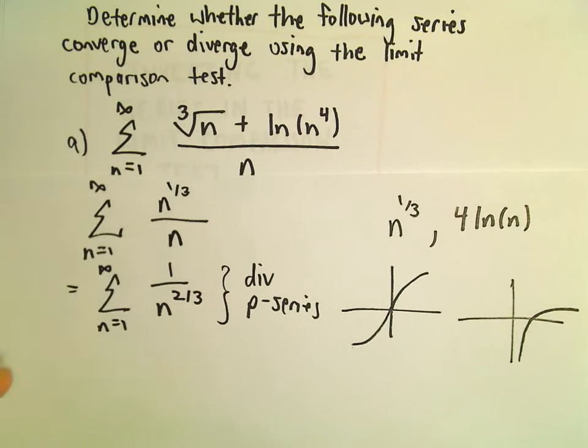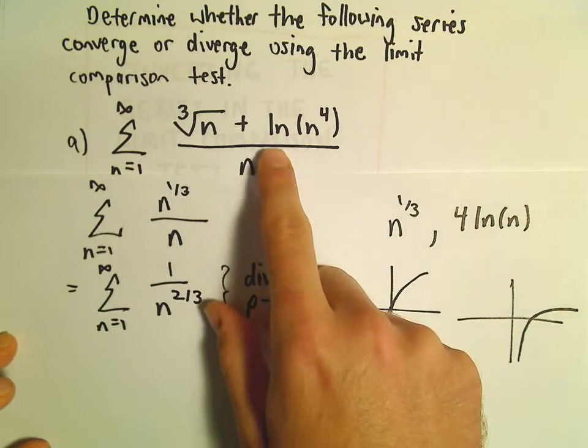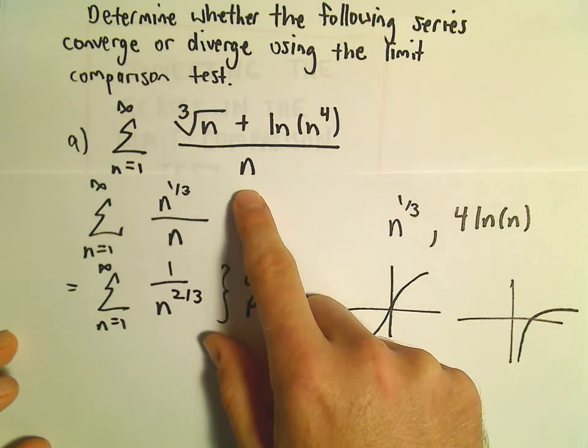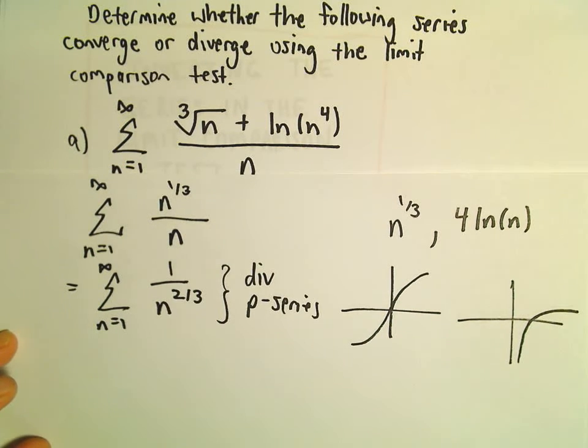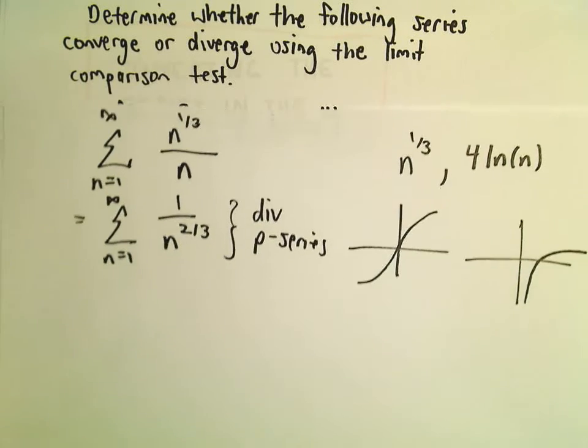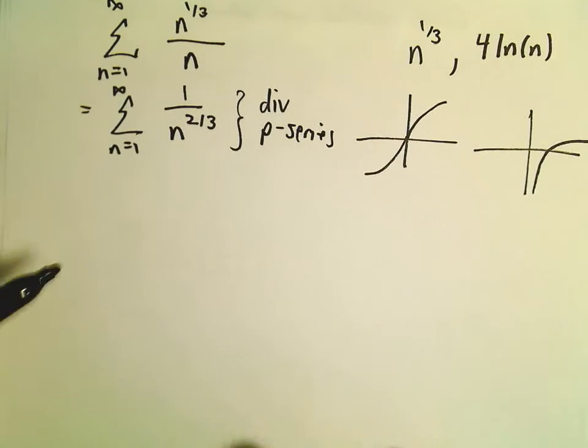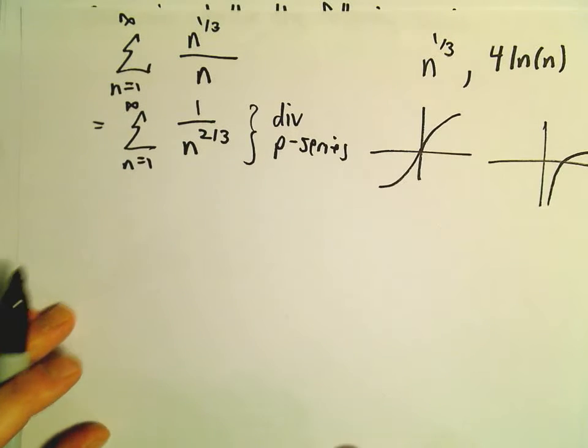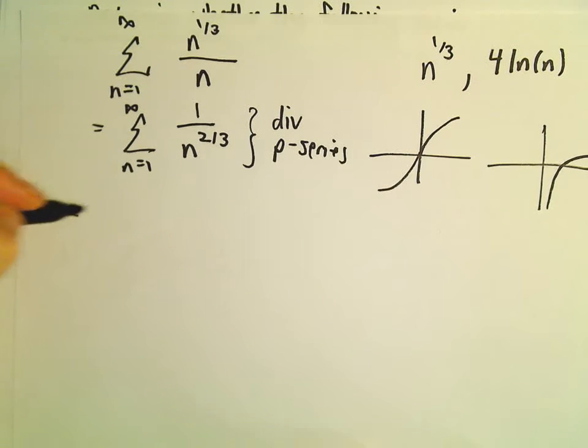You know, if you weren't sure which function to keep and you kept 4 times the natural logarithm of n over n, then it's kind of like, well what does that function do? I guess you could justify that actually using the integral test. But to me, we've got a nice p-series, and so I think let's try working with this.